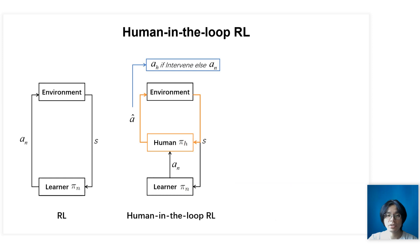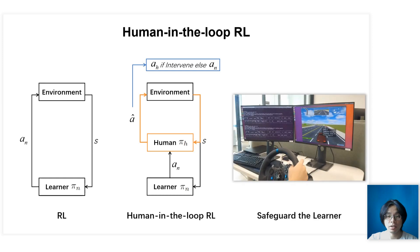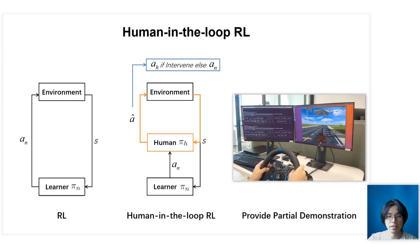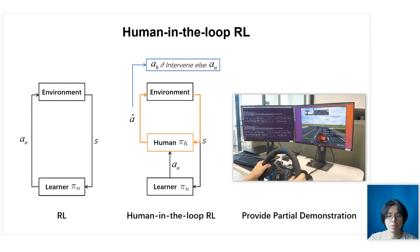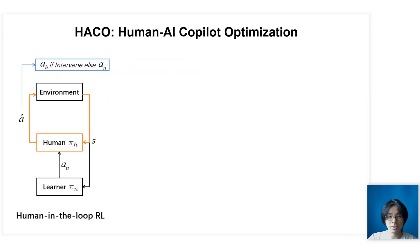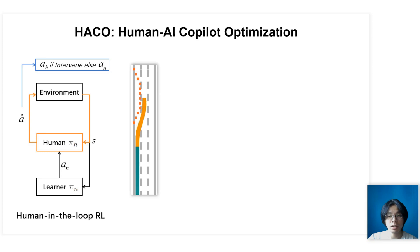This mechanism can bring two benefits. First, the human can serve as a guardian and save the agent from dangerous situations, like sidestepping obstacles. Second, the agent can directly learn from human demonstrations without explicitly designing a reward function. To illustrate, here we show a co-pilot trajectory where the human takes over and helps the agent sidestep the obstacle.